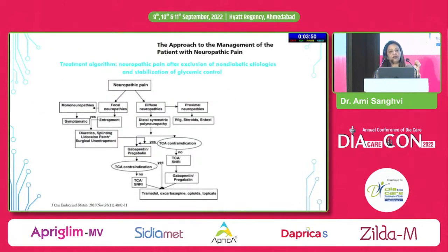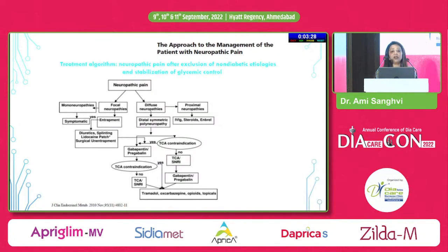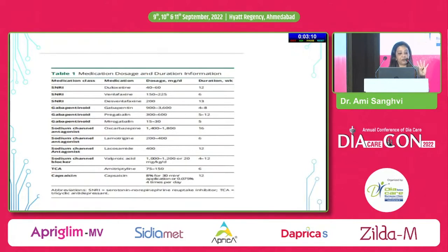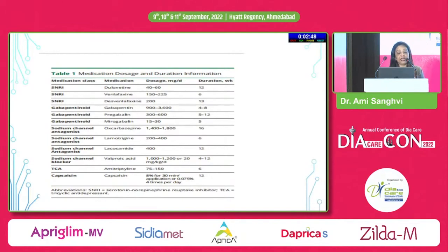The treatment algorithm: once a patient presents with neuropathic pain, identify the type, rule out other causes, and if it is distal symmetric polyneuropathy, start either gabapentinoids or TCAs. If TCAs are contraindicated, use gabapentinoids, with add-on molecules if not relieved over time. The 2022 guidelines — an update to the American Academy of Neurology 2011 statement — recommend four classes: SNRIs, gabapentinoids, sodium channel blockers, and TCAs. However, sodium channel blockers must be used with great caution due to teratogenic effects, dysglycemia, and weight gain, and should be last alternatives.